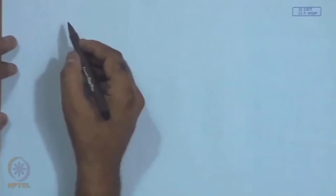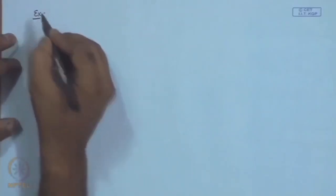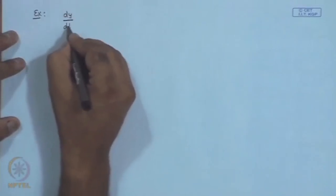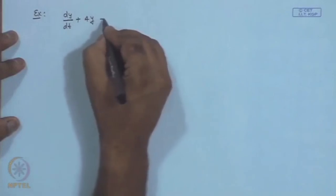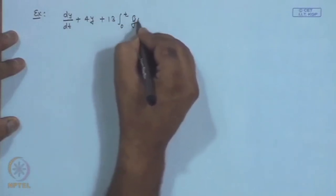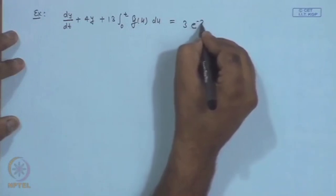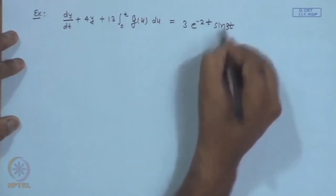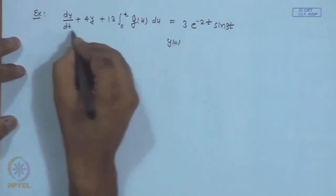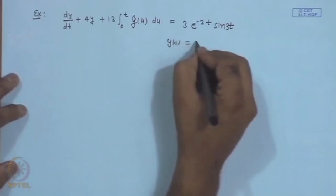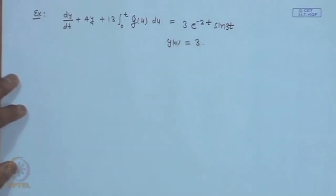Now we consider an integro-differential equation — one containing both differential and integral terms. The example is: dy/dt + 4y + 13·∫₀ᵗ y(u) du = 3e^(−2t)·sin 3t, with y(0) = 3.